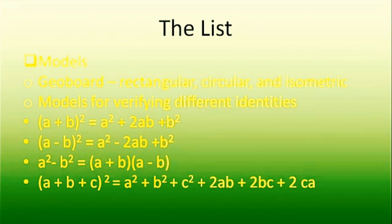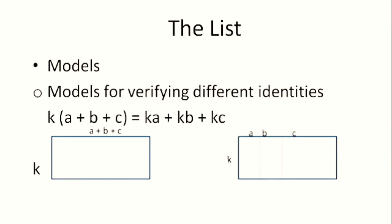We can have a model for a² and a model for a² − b². We can have a model for k(a + b + c) = ka + kb + kc: take a rectangle whose one side is (a + b + c) and another side is k; its area is k(a + b + c). Divide it into three parts a, b, and c — the area of part a is ka, part b is kb, and part c is kc, thus proving the distributive identity.